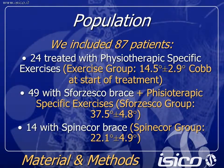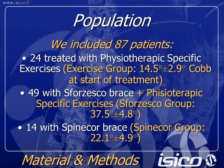Of these 87 patients, 24 were treated with physiotherapy-specific exercises — that is the exercise group. Cobb degrees were 14.5. 49 were treated with Sforzesco brace plus physiotherapy-specific exercises, 37.5 degrees at start of treatment, and 14 with spinal cord brace, 22.1 degrees at start of treatment.